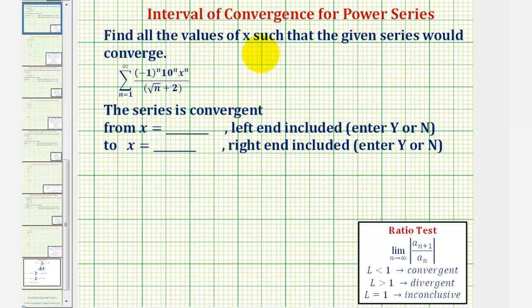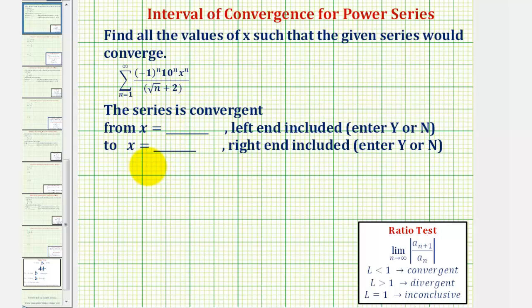We want to find all the values of x such that the given series would converge, which is called the interval of convergence of the power series. We'll begin by applying the ratio test, where we know this limit must be less than one in order for the series to converge. This will give us an open interval of convergence, and then we'll test the endpoints to see if the series converges or diverges at the two endpoints.